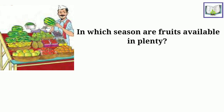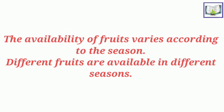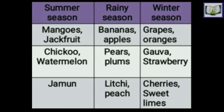In which season are fruits available in plenty? Winter season has plenty of fruits. In which season do we get fewer fruits? Summer season. The availability of fruit varies according to the season. Different fruits are available in different seasons. Make a column according to the season. Summer season: mangoes, jackfruit, chiku, watermelon, jamun. Rainy season: banana, apple, pear, plum, litchi, peach. Winter season: grapes, oranges, guava, strawberry, cherries, sweet lime.